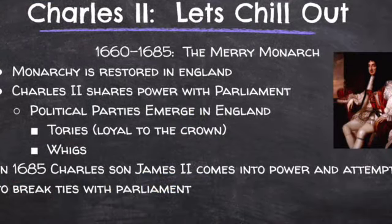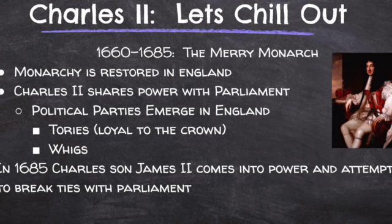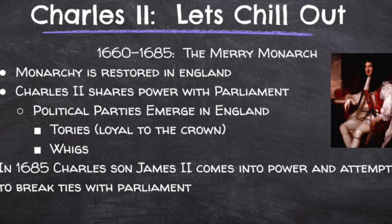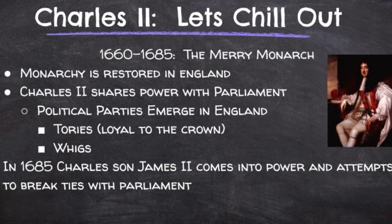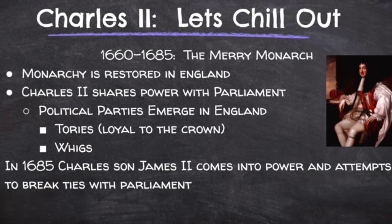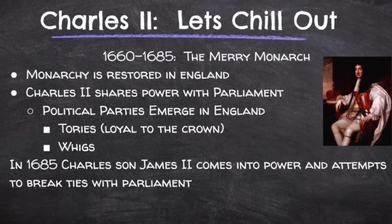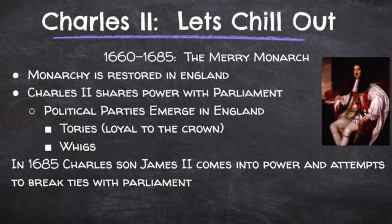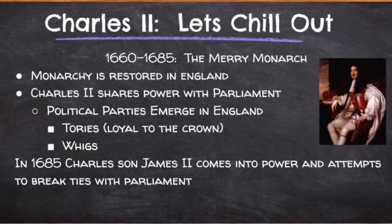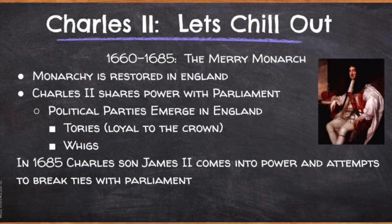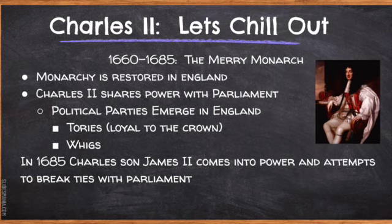While Louis XIV is consolidating power in France, the monarchy is restored in England under the rule of Charles II. Unlike his father, Charles II governs differently. For example, Charles suspends laws that Parliament had passed that discriminated against Catholics, and Parliament in turn said that only Anglicans could hold military and civil offices. More religious and political disagreements followed. As a result, we get the development of political parties in England — the Tories, who are loyal to the crown, and the Whigs, who are loyal to Parliament.